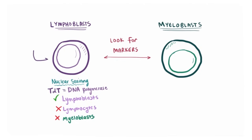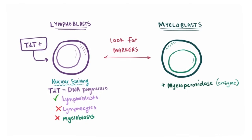So if a nuclear stain comes out positive for TDT, we know it's got to be a lymphoblast. For myeloblasts, the presence of myeloperoxidase — an enzyme — indicates that we've got a myeloid blast. Usually this is done by cytoplasmic staining, but you can also look for the crystallized version of the enzyme called an Auer rod under the microscope.